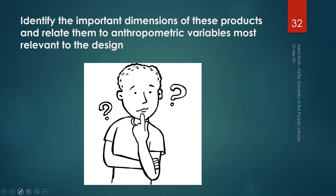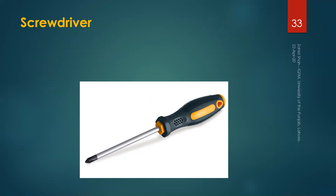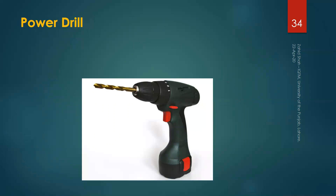In the following slides I will show you a product and you have to do two things: first, identify the important dimensions of the product shown; second, relate them to the anthropometric variables most relevant to the design. The first product is a screwdriver — think about what are its important dimensions and the corresponding important anthropometric variables. The second product is a power drill — identify the important dimensions and corresponding anthropometric variables.